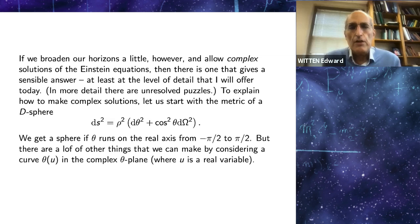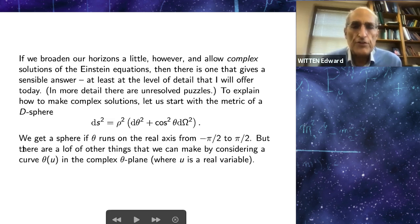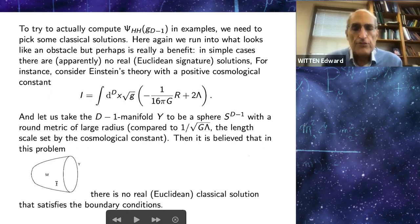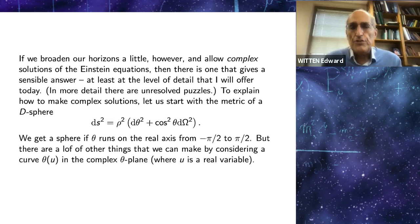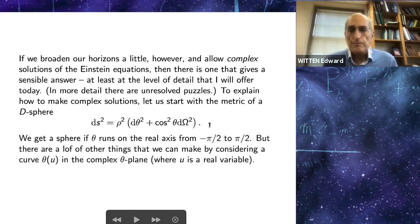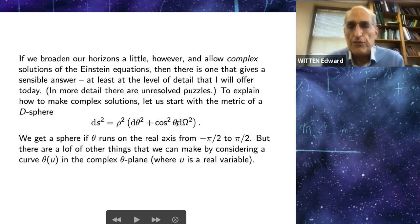However, if we broaden our horizons and allow complex solutions of the Einstein equations, then there is one that gives a sensible answer, at least at some level of detail. So how are we going to find a complex solution of this problem of finding an Einstein metric whose boundary is a round sphere with large radius? We'll start in Euclidean signature with the metric of a d-sphere, where rho, the radius, is essentially one over the square root of g times lambda. Assuming that theta is a real variable, the metric goes around a d minus 1 sphere. Usually theta would run on the real axis from minus pi over two to pi over two. But there are a lot of things we can make by considering a curve theta of u in the complex theta plane, where u is a real variable.